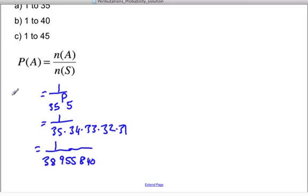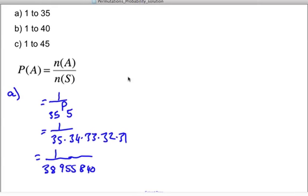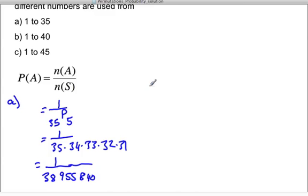So, that's A. Now, for B, we're going to increase the number of digits that we can choose from from 35 up to 40.